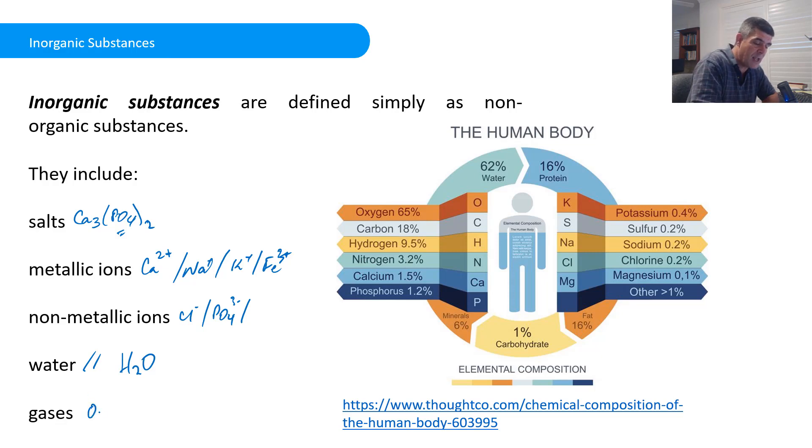And then gases, oxygen and carbon dioxide being the two most critical ones that we would be looking at for living things. Remember, we've got to think about plant cells as well as animal cells, autotrophs and heterotrophs, and carbon dioxide is going to be critical for the process of photosynthesis, even as it is a waste product of respiration for heterotrophs.